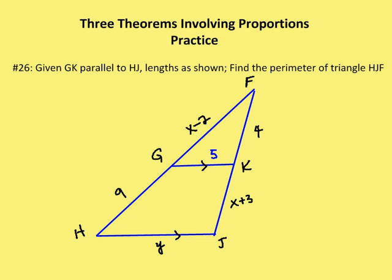Number 26 in the book for chapter 8.5. We're given that GK is parallel to HJ, GK is five units, GF is x minus two units, HG is nine units, FK is four, and KJ is x plus three units. We need to find the perimeter of the triangle. So first, let's figure out the value of x using the side splitter theorem.